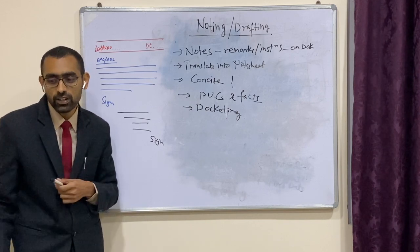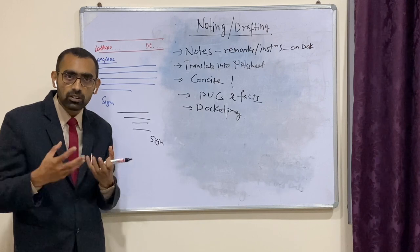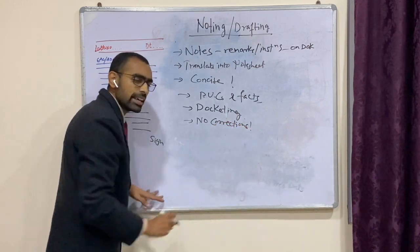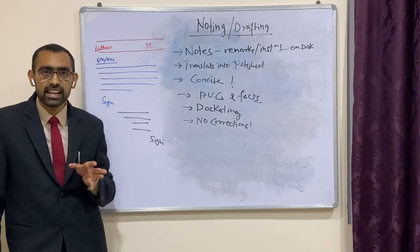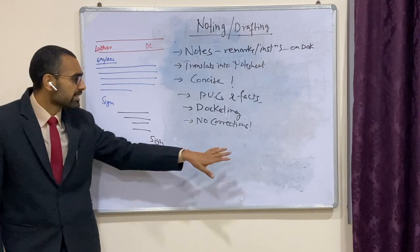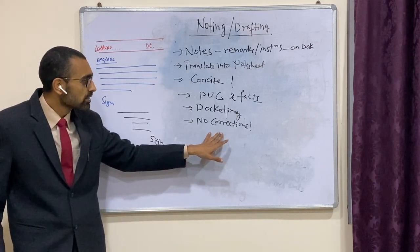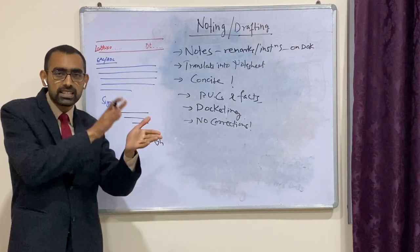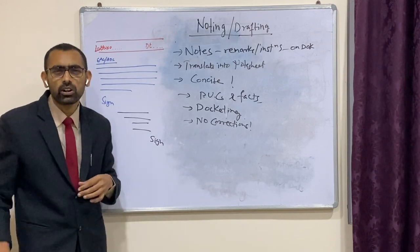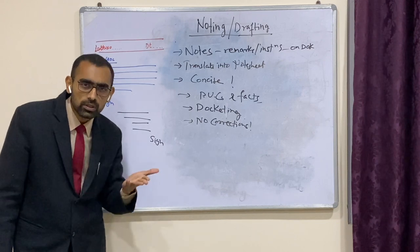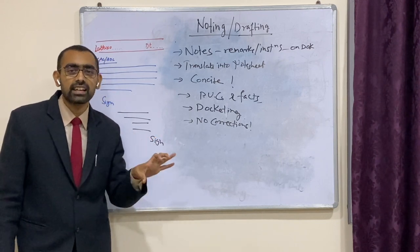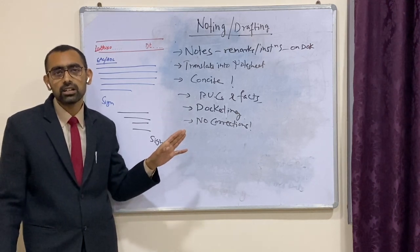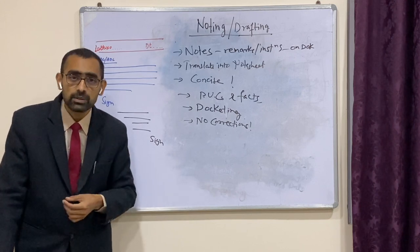Nothing can be corrected or pasted over in a note — no corrections. If there has been some mistake, whether a mistake of fact or any other kind, what needs to be done is that a new note should be recorded subsequently and the correction should be mentioned in the new note without touching the old note. The note shall not be corrected; only a subsequent note should be made and the correction mentioned there.